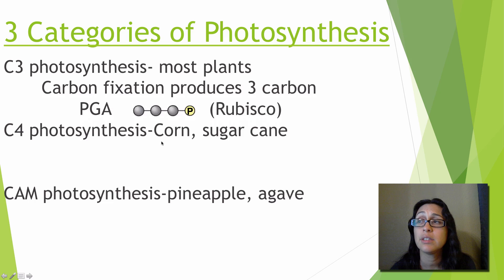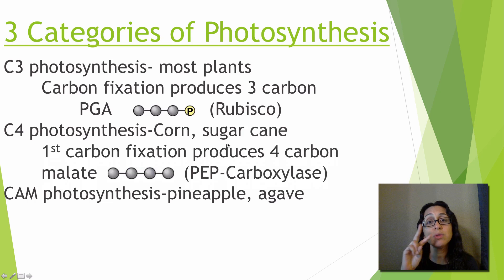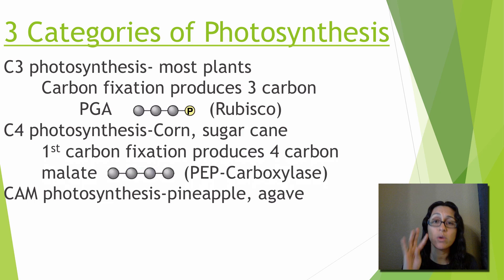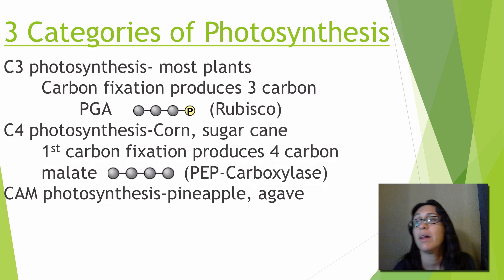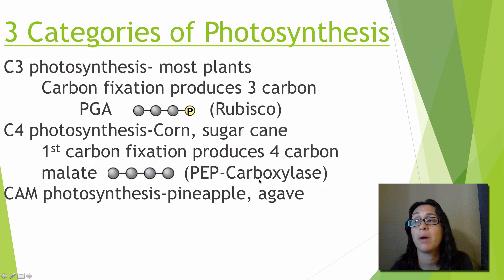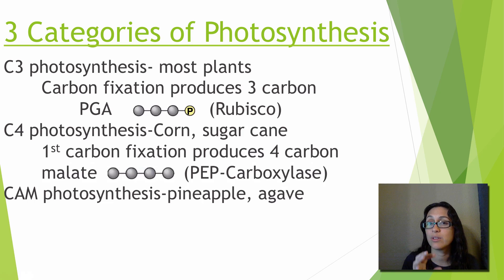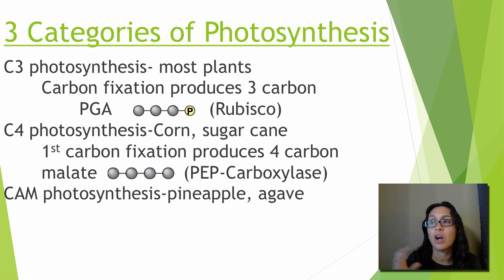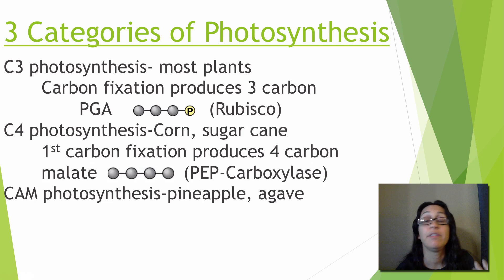C4 photosynthesis involves plants such as corn and sugar cane. Here, carbon gets fixed into molecules twice. The first fixation produces a four-carbon molecule called malate, and this first carbon fixation involves a different enzyme called PEP carboxylase. Its name tells us it only deals with carbon dioxide — it's not going to bind oxygen at all, as it has no affinity for it.